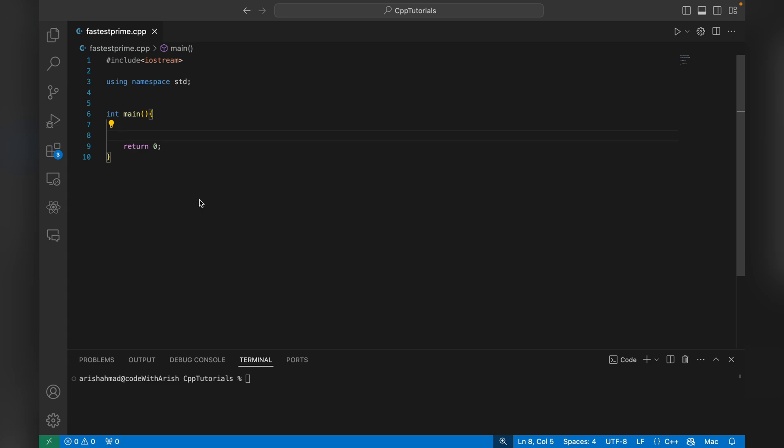Hey everyone, welcome back. Today we'll see the fastest prime number algorithm. The algorithm name is Sieve of Eratosthenes. Let's start with the explanation.